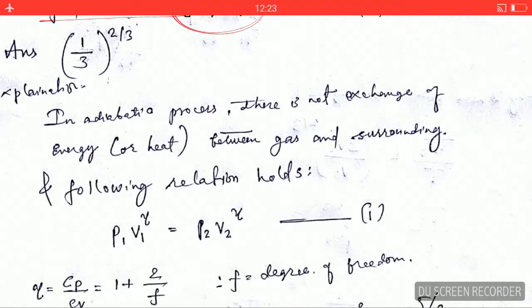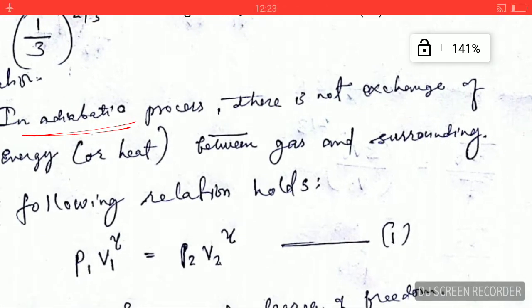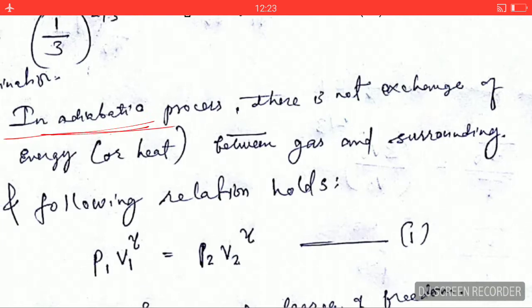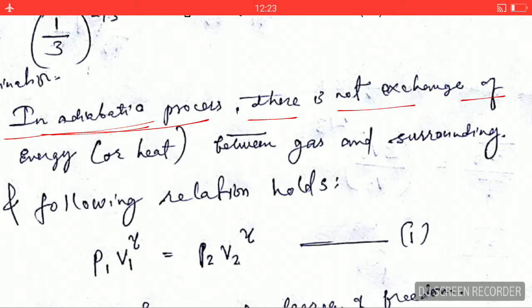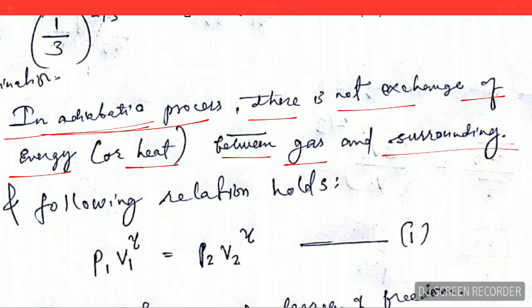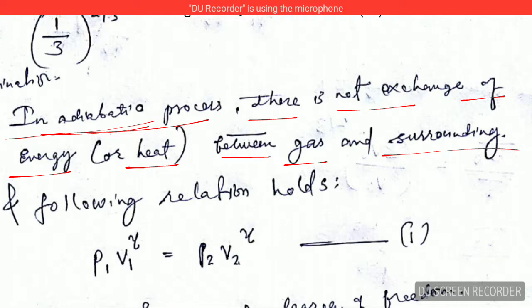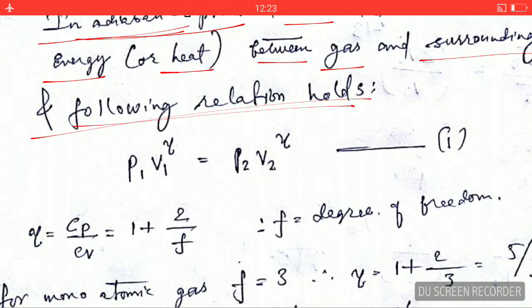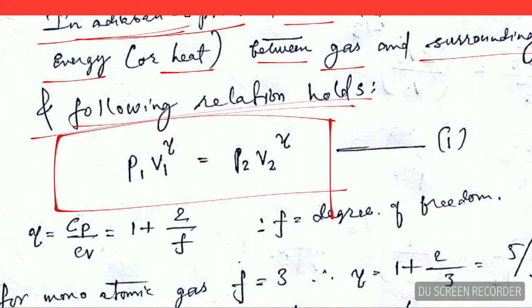In an adiabatic process, there is no exchange of heat between the gas and its surroundings. The following relation holds in an adiabatic process: P₁V₁^γ = P₂V₂^γ.